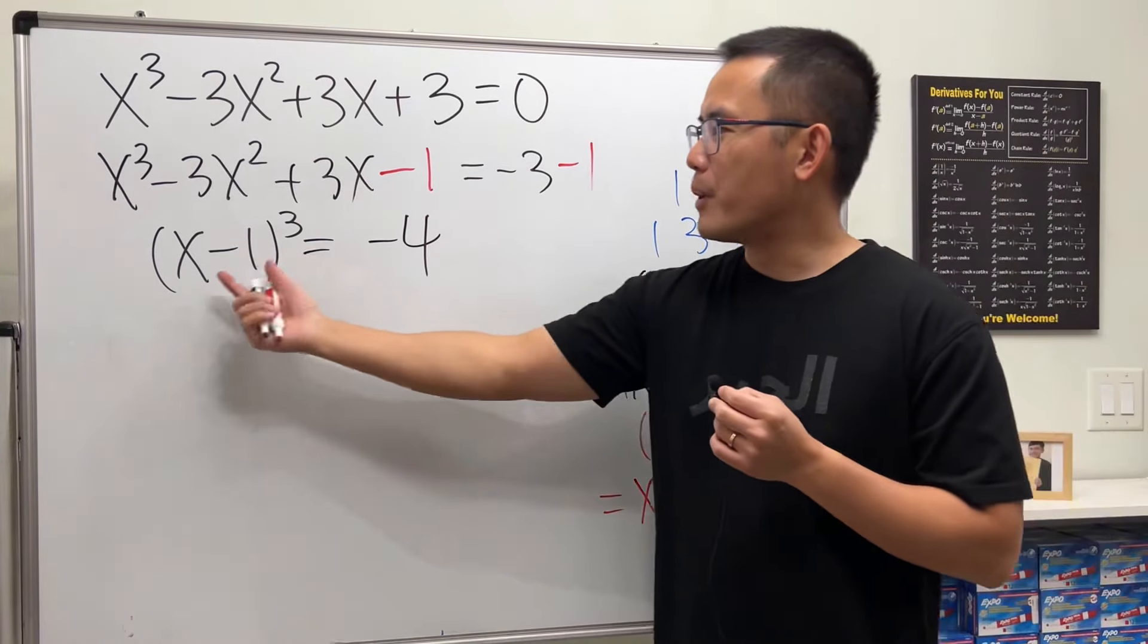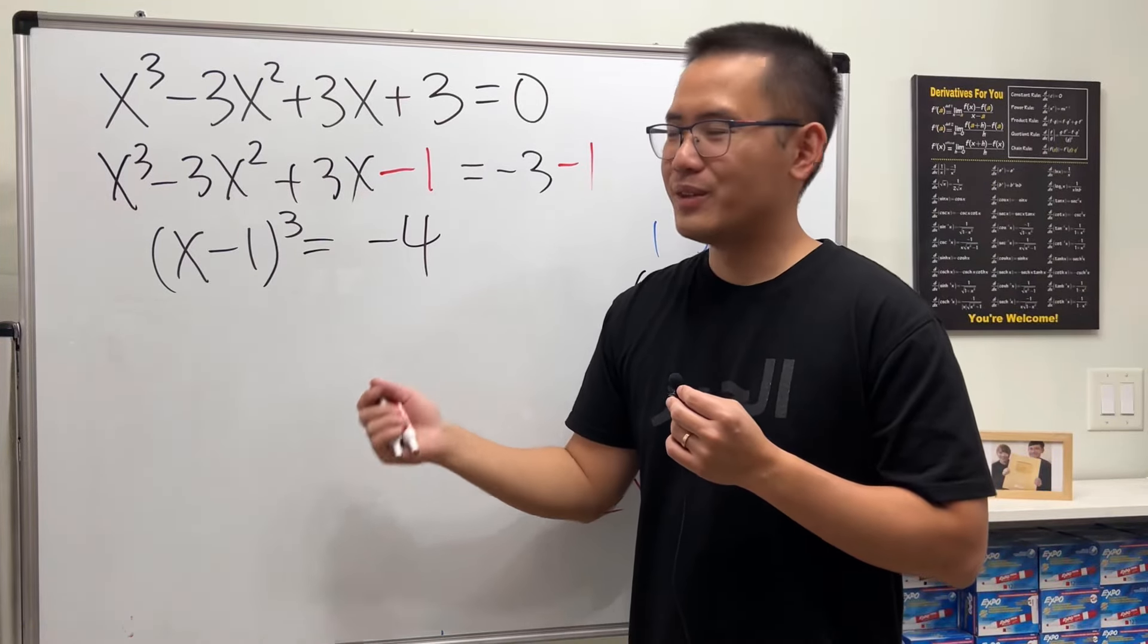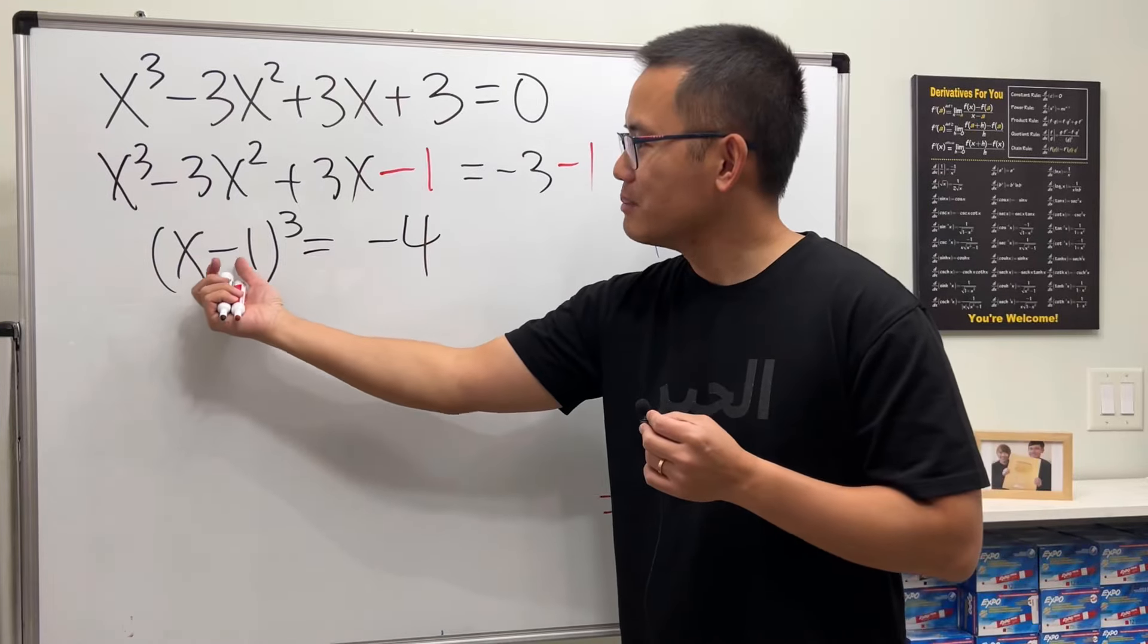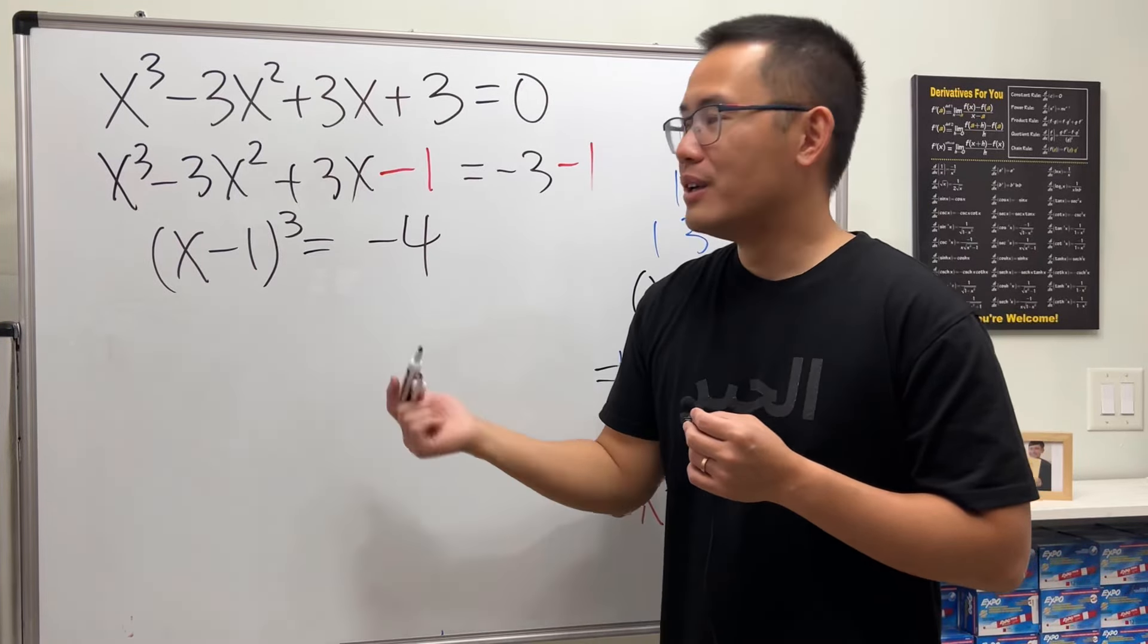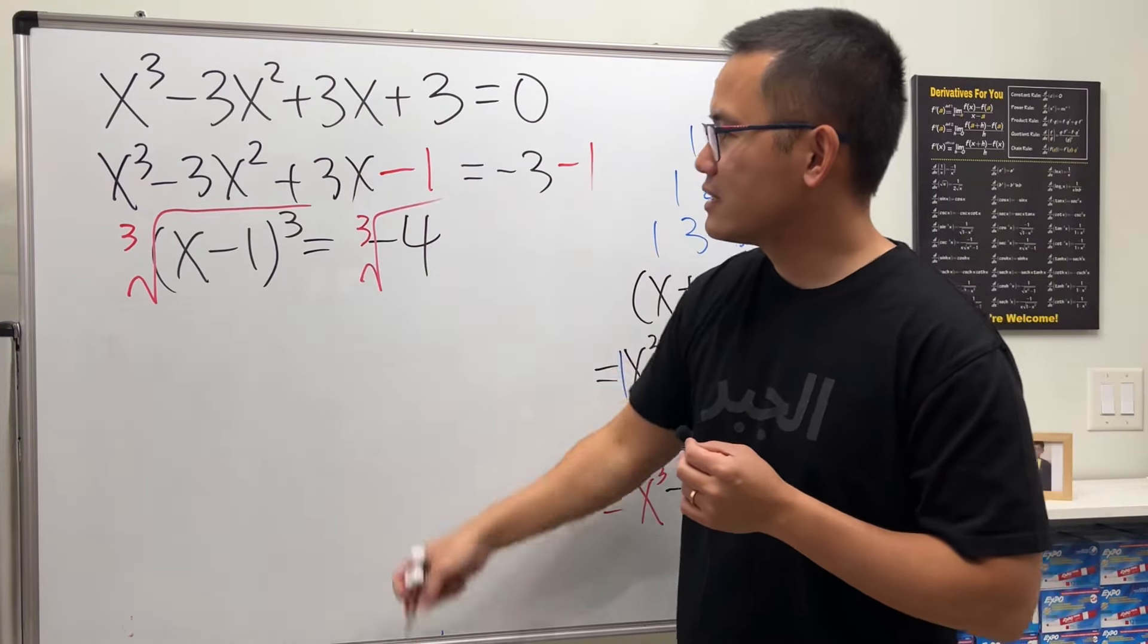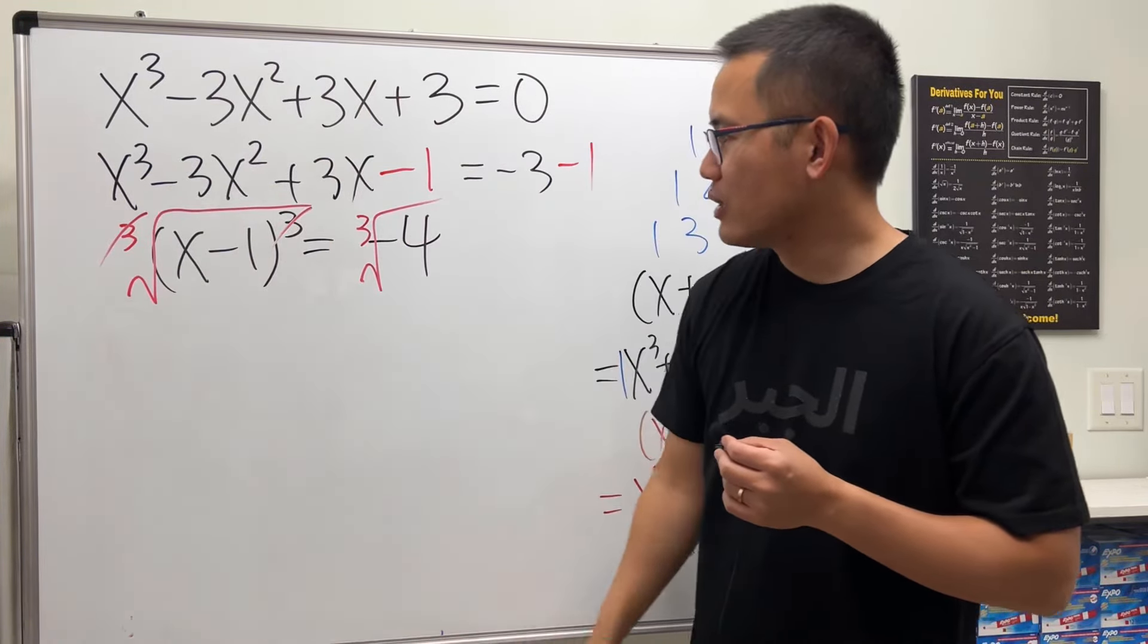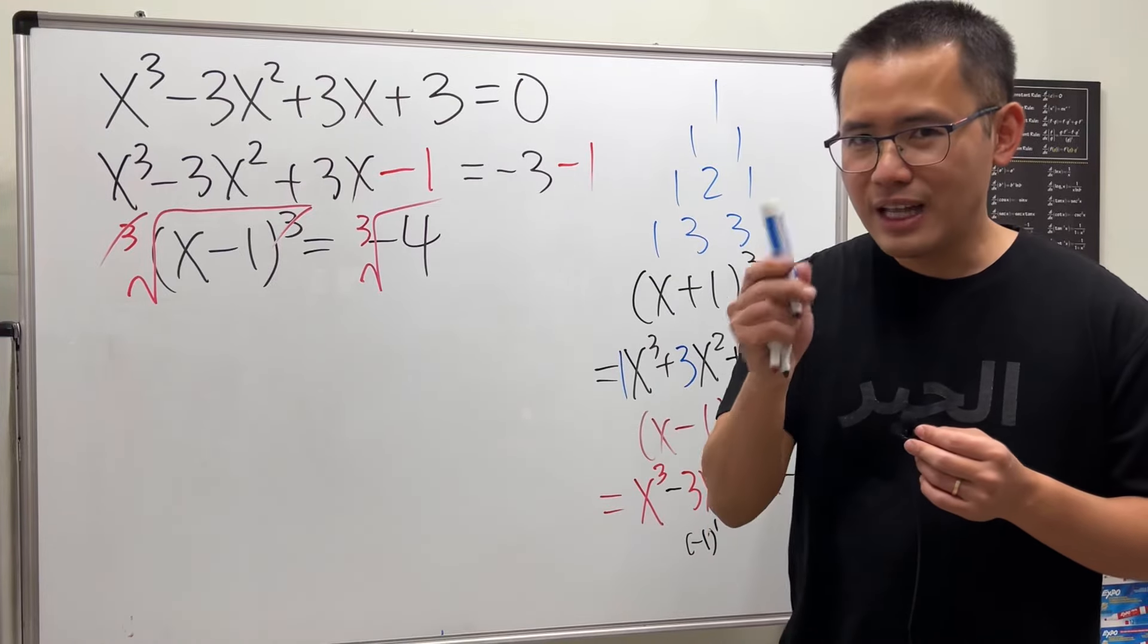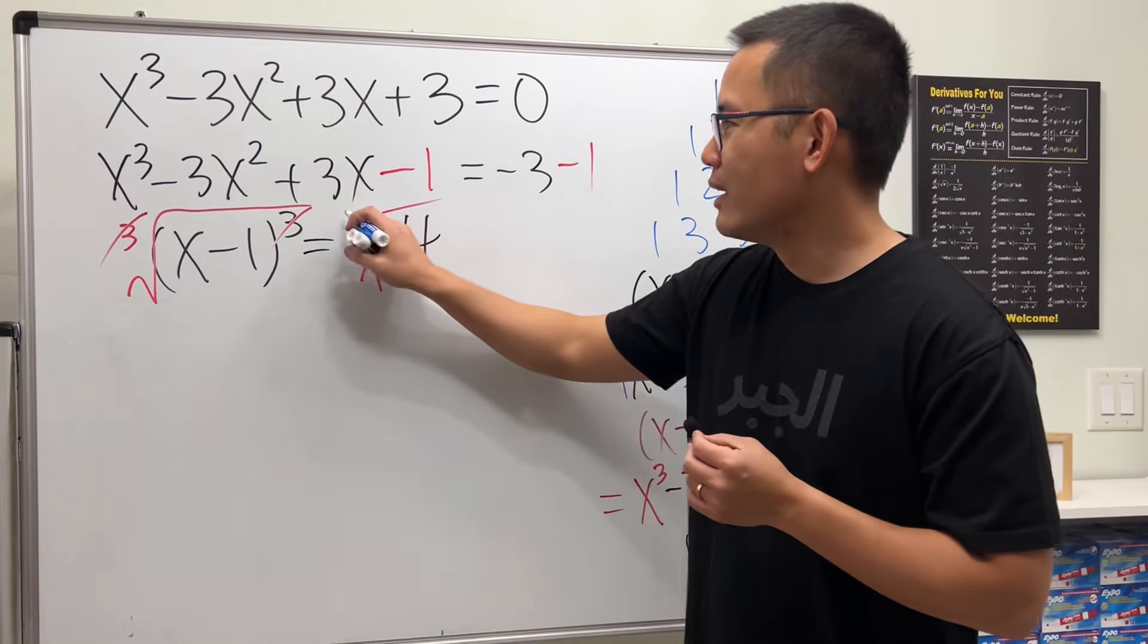Now we have a perfect cube equation. This x is just (x-1)³, so we can take the cube root of both sides so that this and this cancel.